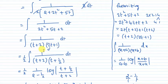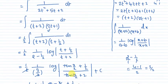Taking 1 by 2 outside, this becomes 1 by 2 integral 1 by t plus 2 times t plus half dt. The integration formula is: integral 1 by x plus a into x plus b dx equals 1 by a minus b log mod x plus b by x plus a.